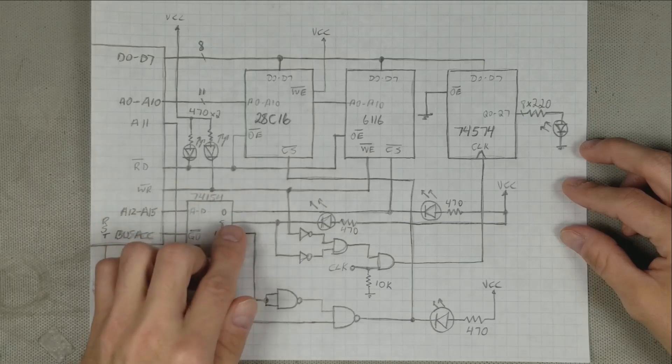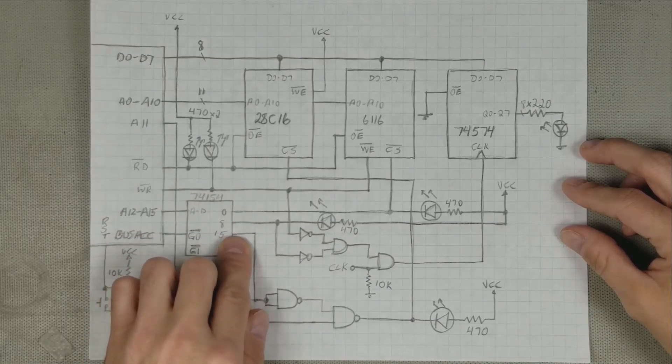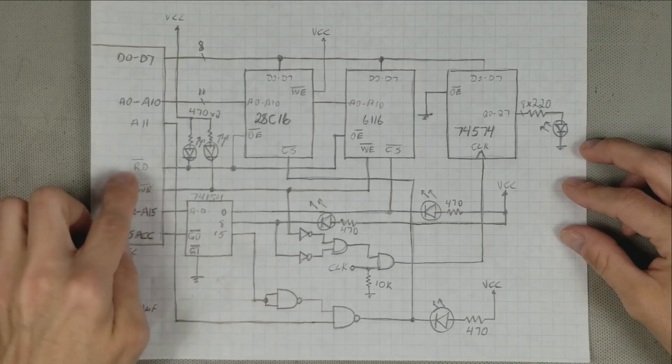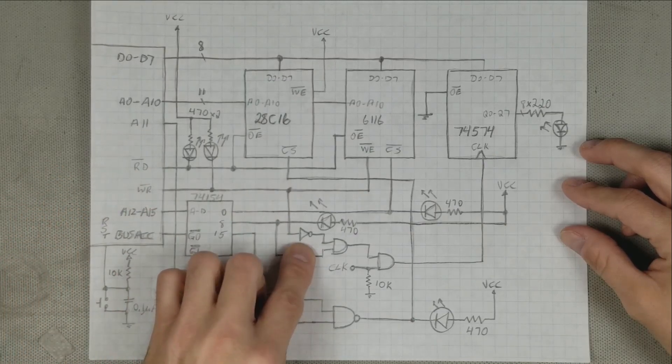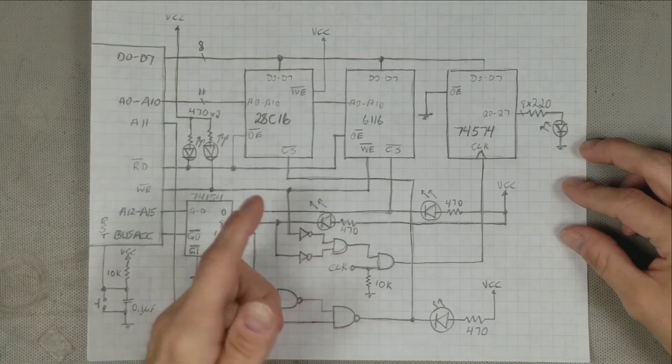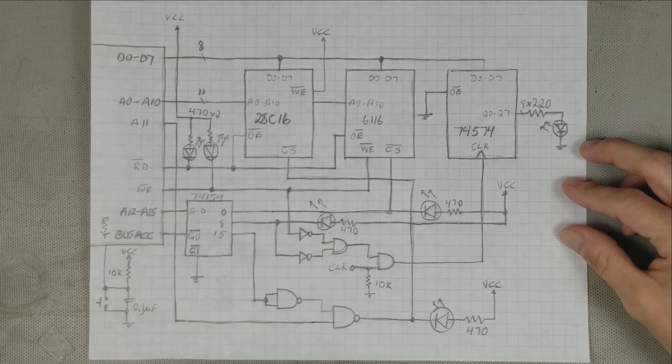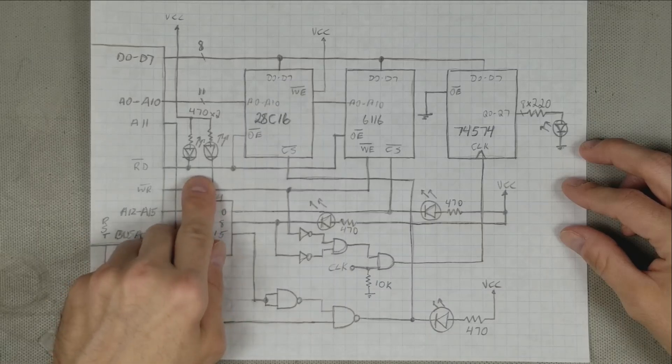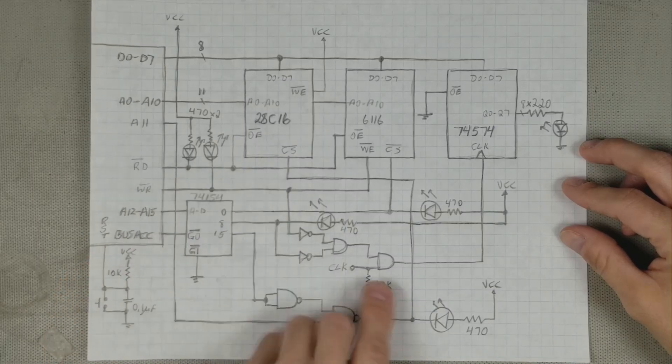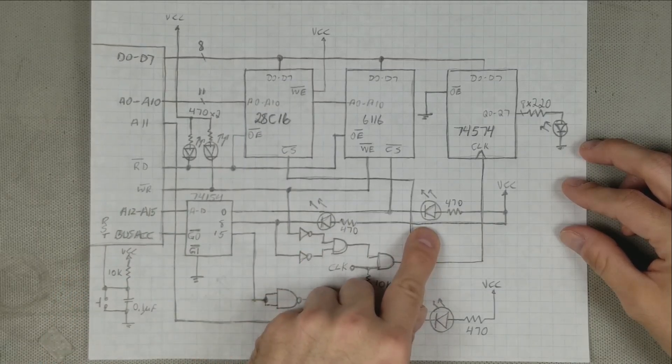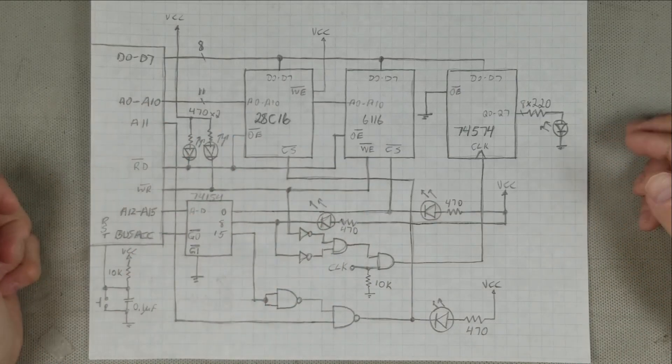The output port should only be active when the decoder 8 output is low, the write line is also low, and the clock goes from low to high. I've done this with two inverters and two AND gates. Additionally, I've added LEDs to indicate when the read or write lines are active, as well as when the RAM, ROM, and output ports are active. With that drawn up, let's build the circuit.